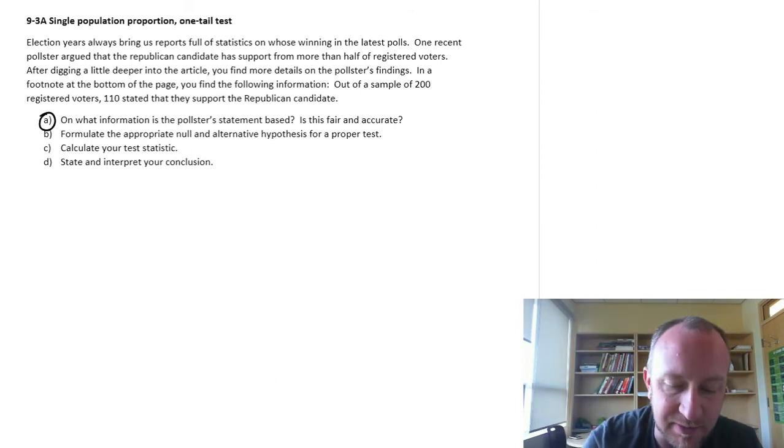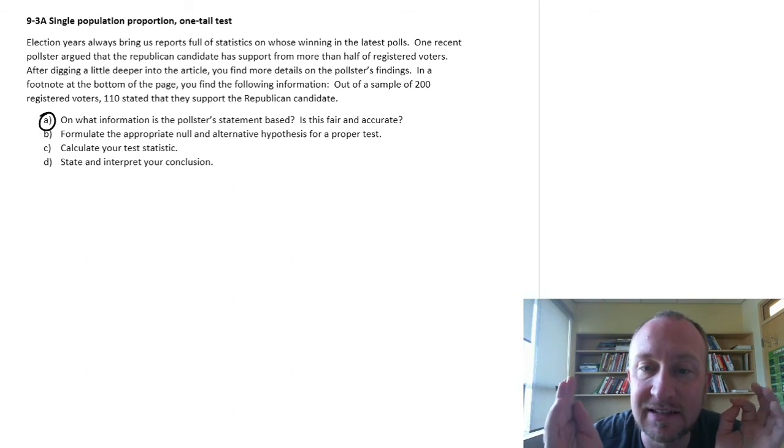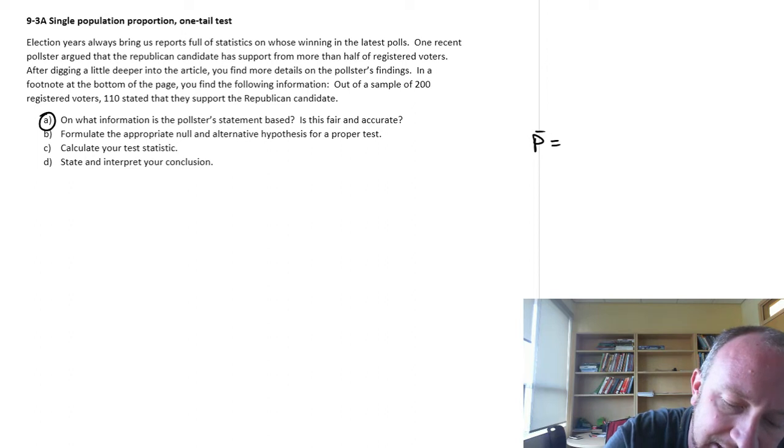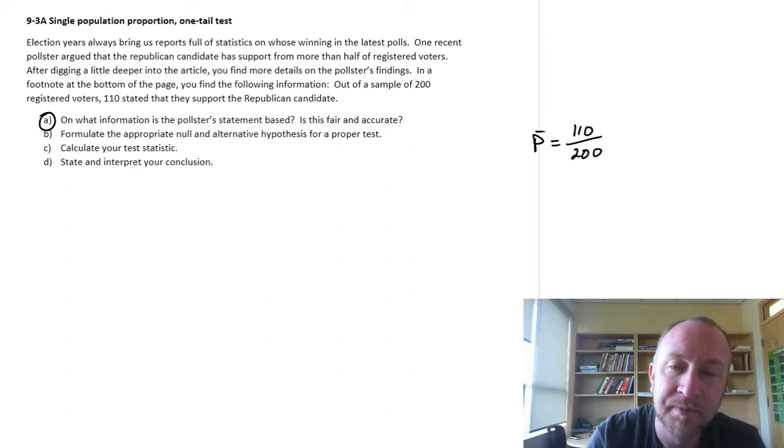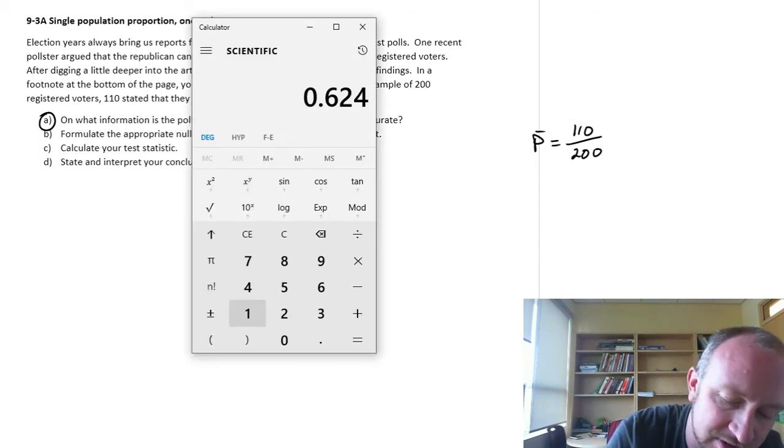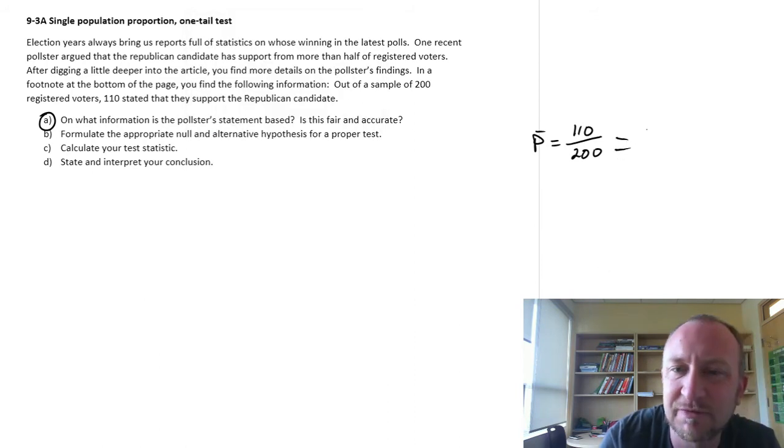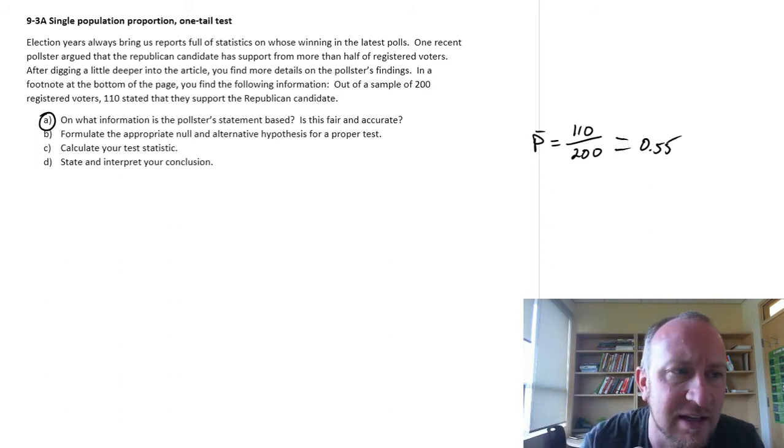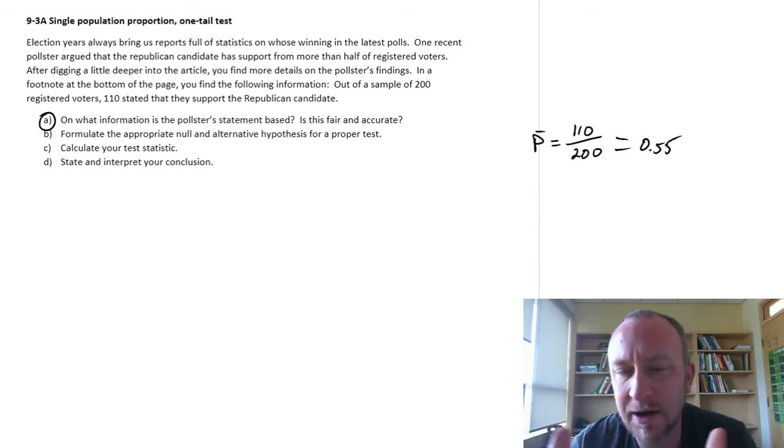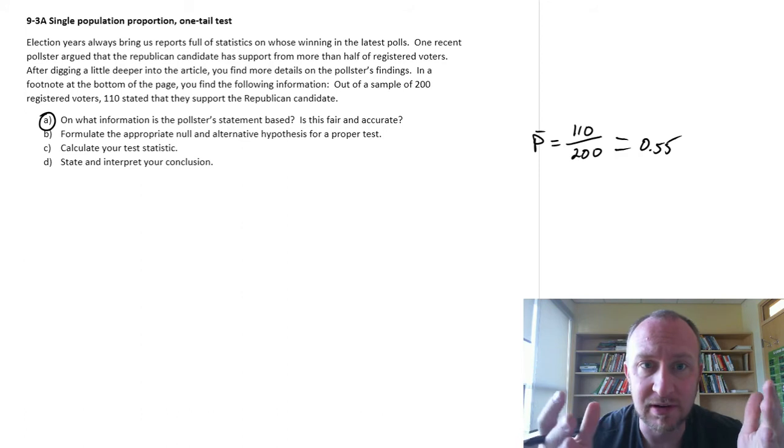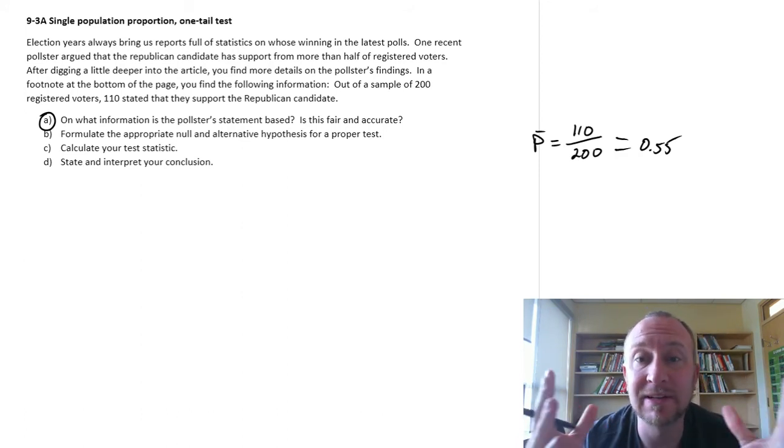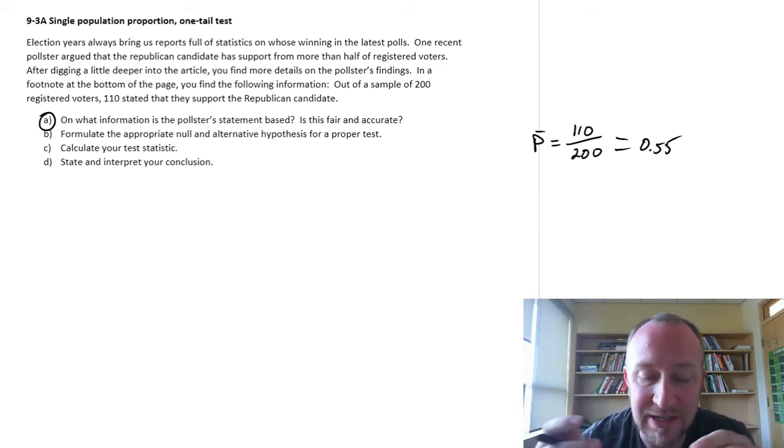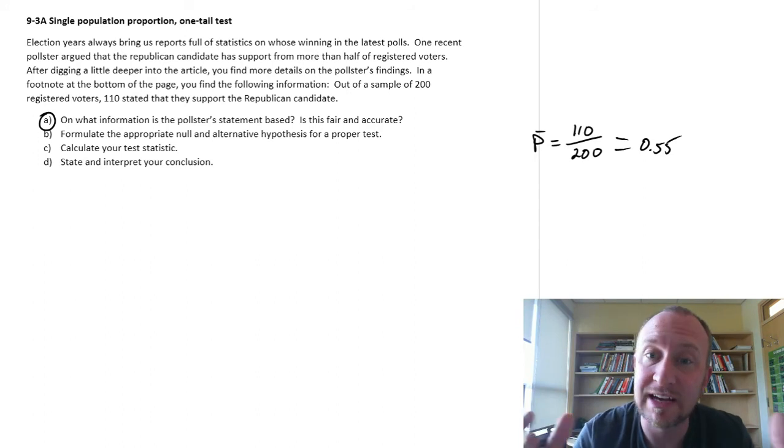So part A, on what information is this pollster's statement based? Is it fair and accurate? Well, all of this pollster is looking at is the sample proportion. If we look at the sample proportion, we're looking at 110 out of 200 voters. So this is giving us a sample proportion of 110 out of 200, so 0.55. We could say 55%, but I always like to keep things in decimals, avoids mistakes later on. Actually, I'll show you where a common mistake is that I've seen my students make. So our sample proportion says 55% of the sample support the Republican candidate. Is it fair to extrapolate that to the larger population? Well, no. That's the whole reason behind hypothesis testing is because there's random variation in these samples. So what we should do, what we need to do, is develop a hypothesis test to see if this is statistically significant, statistically greater than half or 0.5.